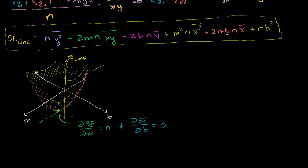If we take the partial derivative of this expression with respect to m, this first term has no m terms in it, so it's a constant from the point of view of m. As a reminder, partial derivatives work just like regular derivatives — you're assuming everything except the variable you're differentiating with respect to is a constant. So in this expression, all the x's, y's, b's, and n's are constant. This first term has no m, so its partial derivative with respect to m is 0.